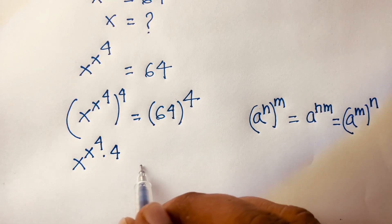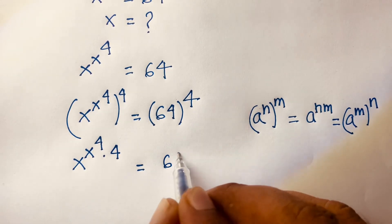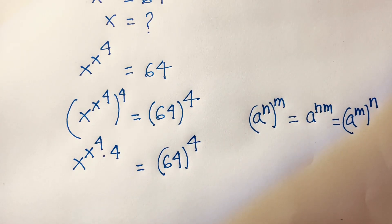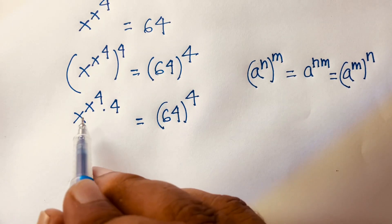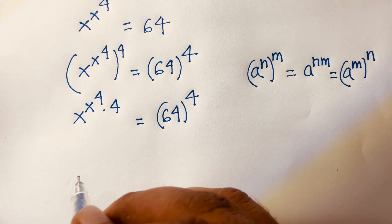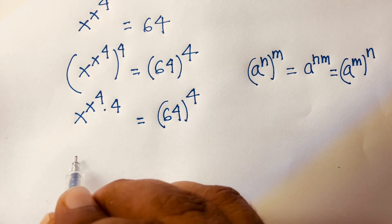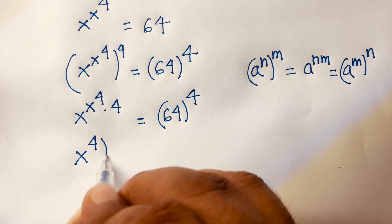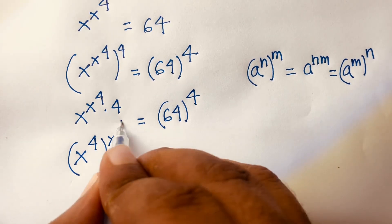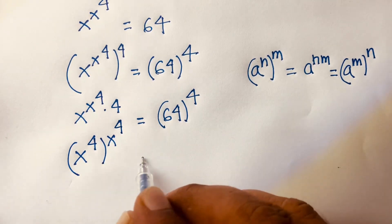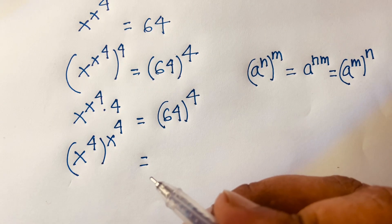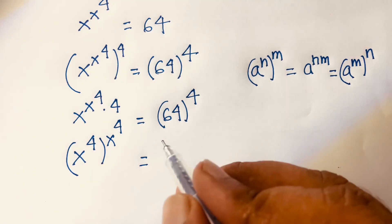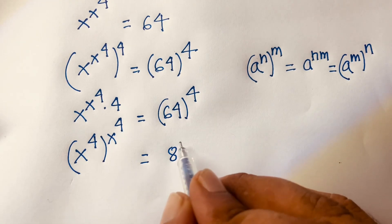So this equation becomes x to the power 4 raised to the power x to the power 4, on the left side. On the right side, 64 raised to the power 4. Now, 64 equals 8 squared, so the right side becomes 8 squared, whole to the power 4.